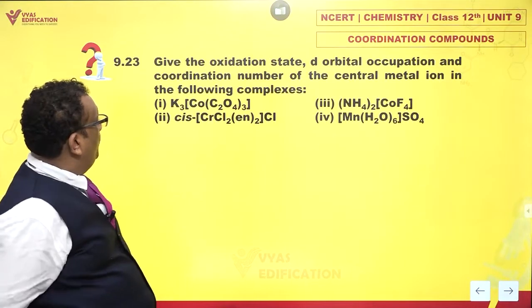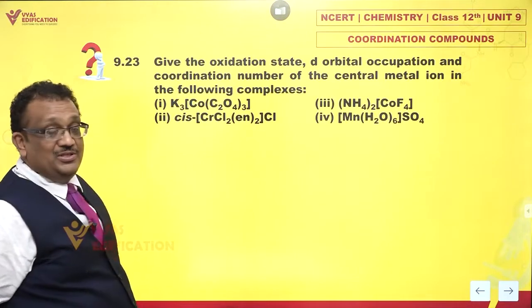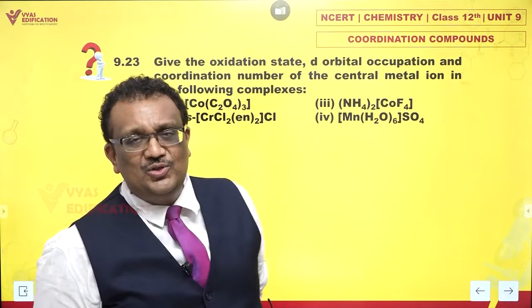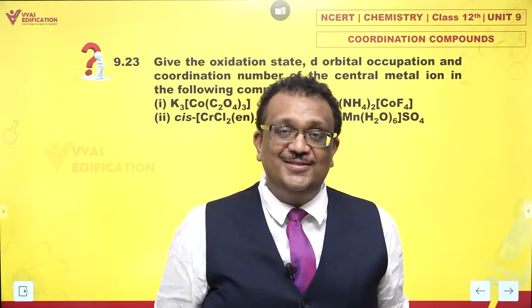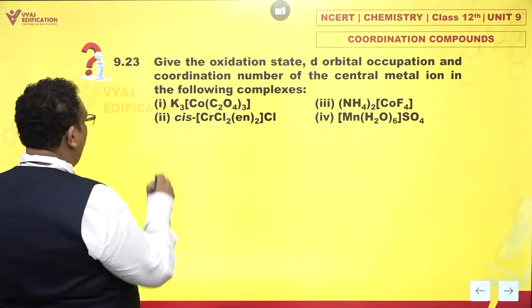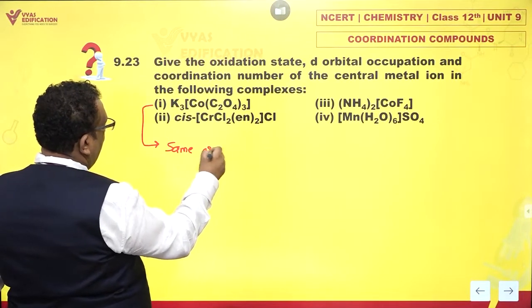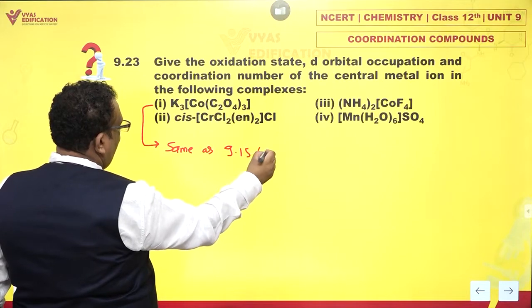Give the oxidation states, d-orbital occupation and coordination number of the central metal ion in the following complexes. They have asked you quite some bit of details. But very interestingly, the first part of this is a repeat. This is same as 9.15 third part.